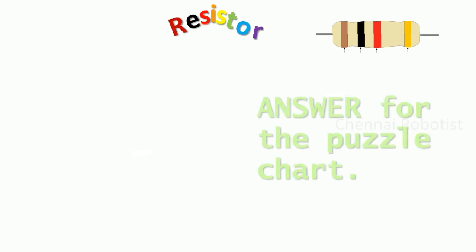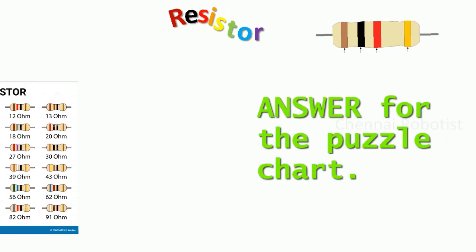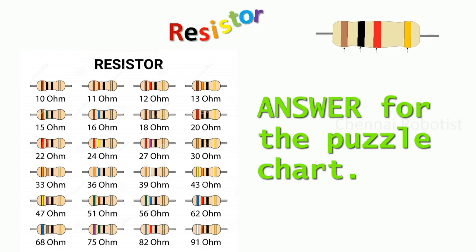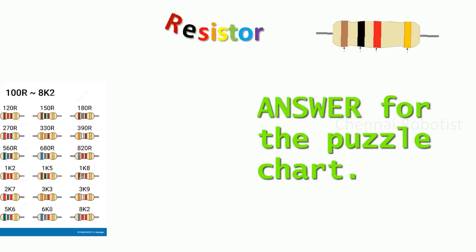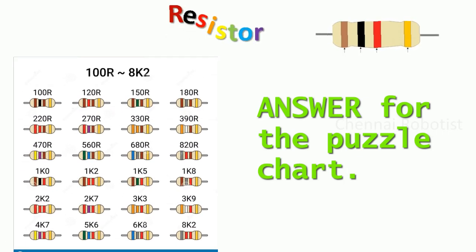I hope I was able to explain clearly about what a resistor is, the types of resistors, how to read the color code, and how to use resistors in series and parallel connections. Thanks for watching! In our next video, we'll learn how to use a soldering iron. Please subscribe to the channel and comment below about this video. See you in the next video, bye bye!